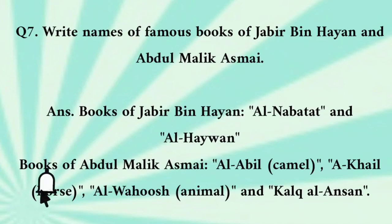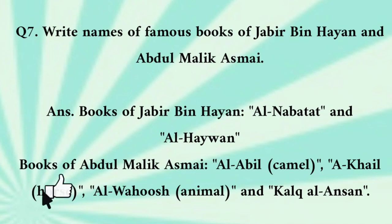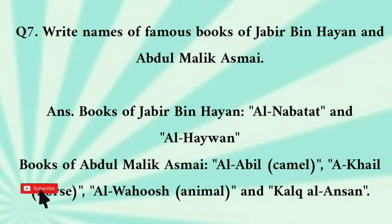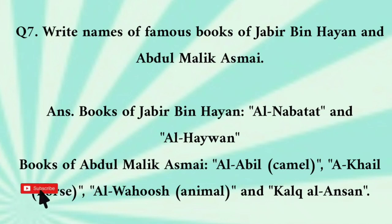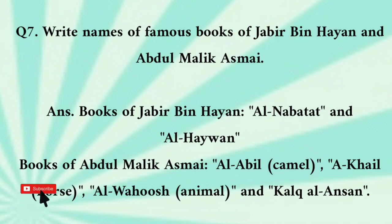Write the names of famous books of Jabir bin Hayyan and Abdul Malik Asmai. Books of Jabir bin Hayyan: Al-Nabitat and Al-Haywan. Books of Abdul Malik Asmai: Al-Abal (Camel), Al-Kail (Horse), Al-Wahush (Animal), and Khalq Al-Insan.